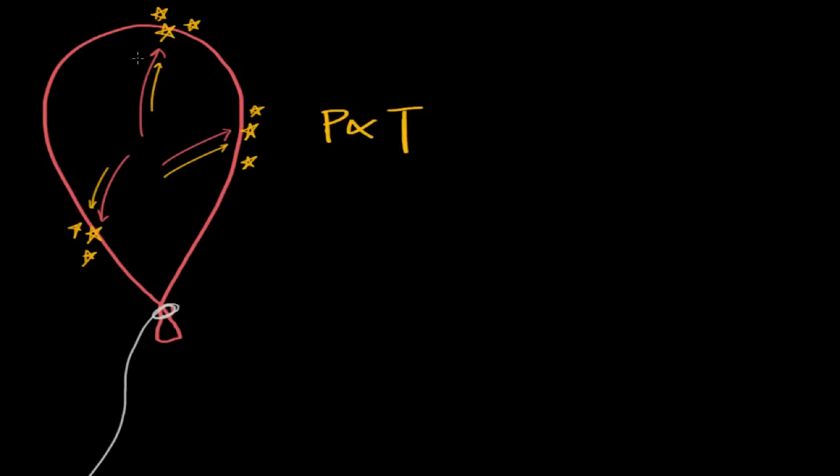Now we also saw that as volume goes down, the pressure goes up. And again, this makes sense, because with less space to move around, the particles will have more collisions with the wall, so pressure will increase. And again, written mathematically, this means that pressure is inversely related to volume. So pressure is related to the inverse of volume. Because we see that as the volume is decreased, the pressure is increased.